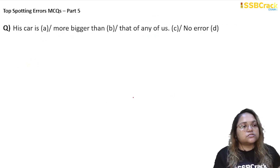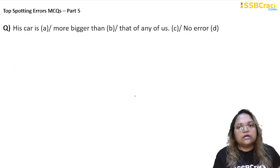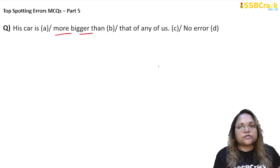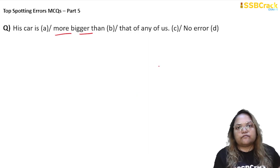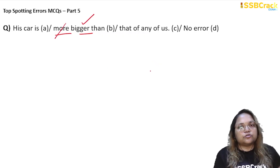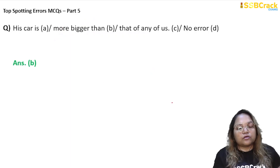Next question: 'His car is more bigger than that of any of us.' Here there is a very prominent error — a double comparative is used: 'more' and 'bigger.' This is a big no-no in English grammar. When you use a comparative, it should be only one adjective in comparative form — either 'bigger,' not 'more bigger.' So it should be: 'His car is bigger than that of any of us.' The word 'more' in part B is wrong, so B is your answer.